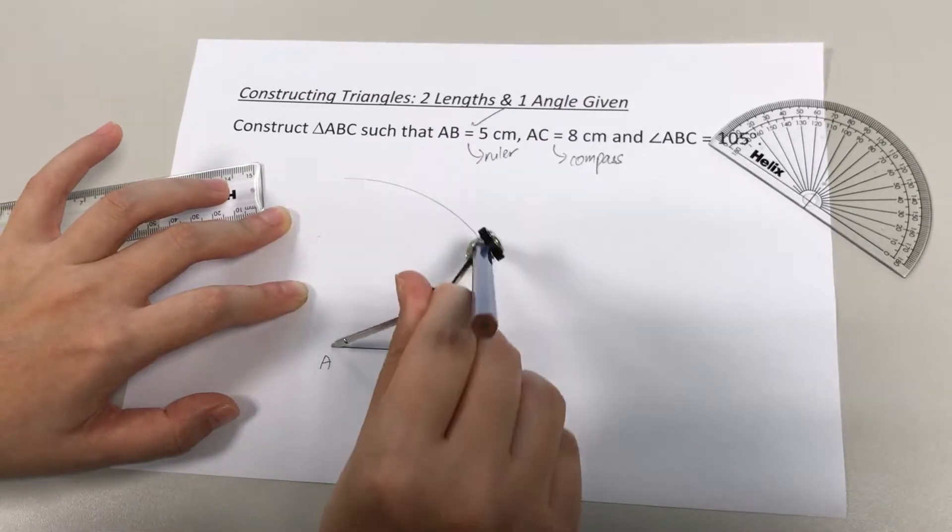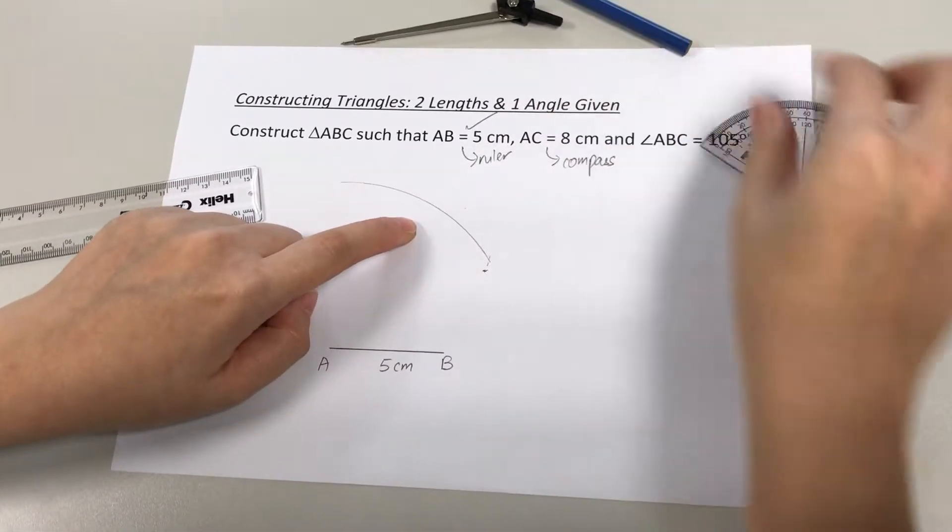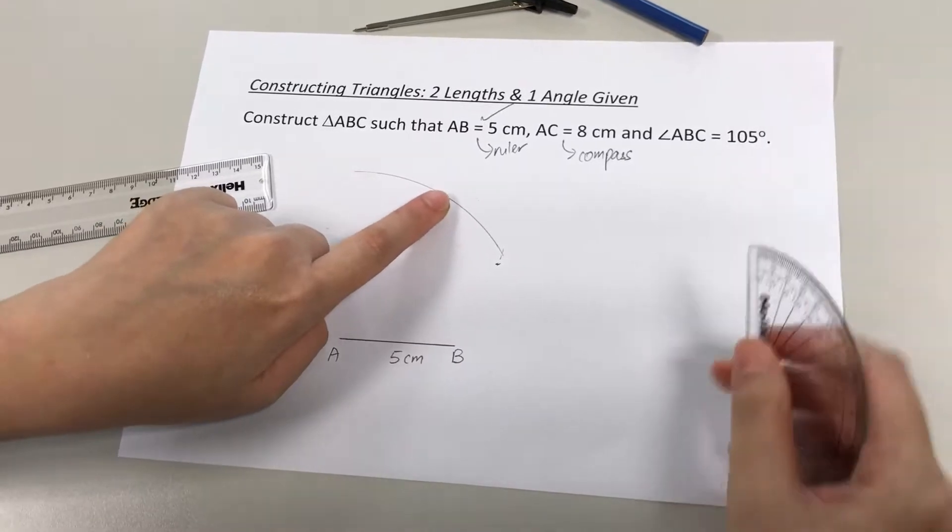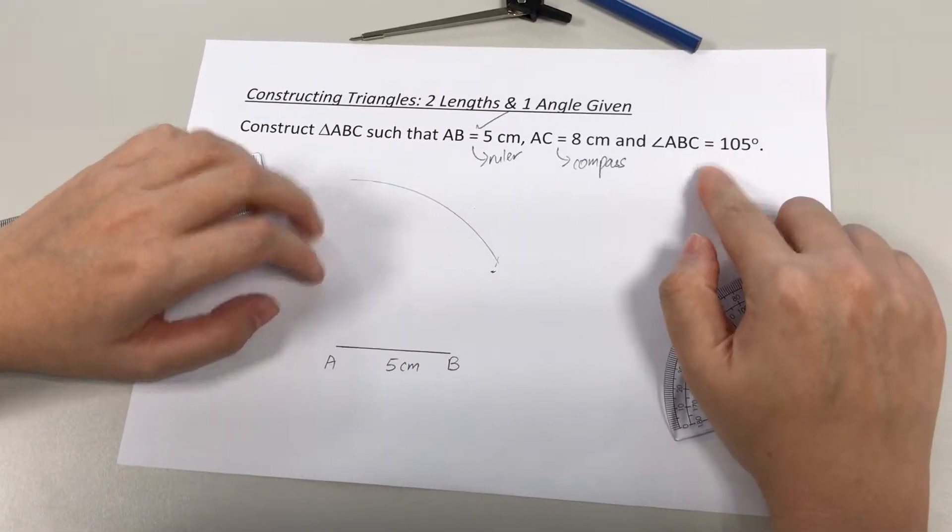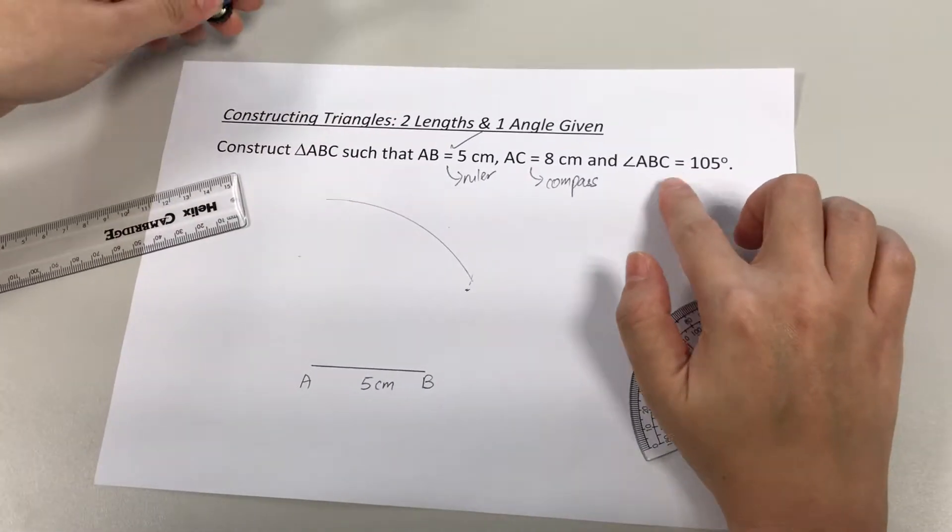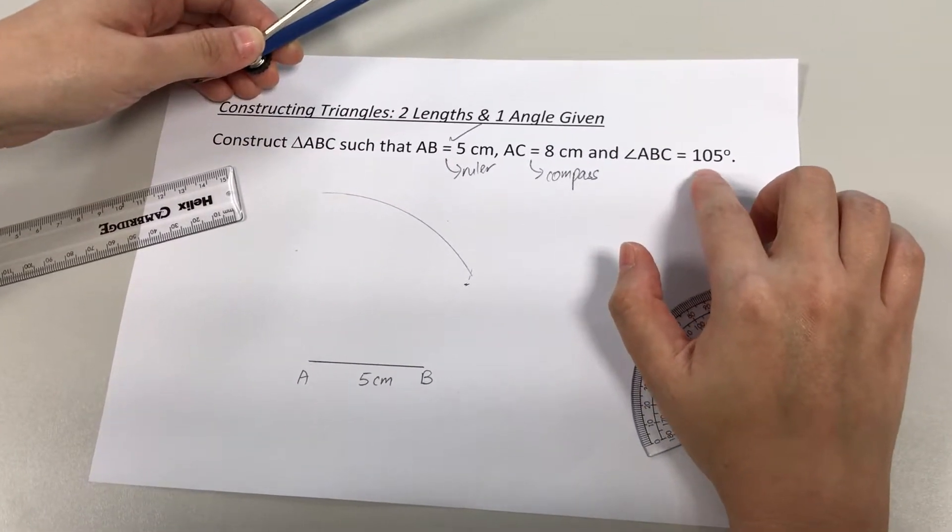I'm going to draw a curve here. It's important that you do not erase this curve that you have drawn because you'll be given marks for working in drawing curves using your compass. Now, the third info that we're given: angle ABC is 105 degrees.